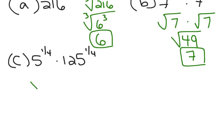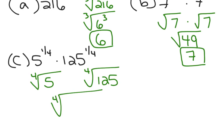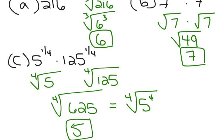In Part C, I'm going to start by rewriting this as the 4th root of 5 times the 4th root of 125. Now, I'm going to multiply them together because they have the same root index. I'm going to get the 4th root of 625. And it turns out that the answer is just 5, because 625 is the same as 5 to the 4th. Whenever the root index and the exponent are the same, they end up just canceling each other out.